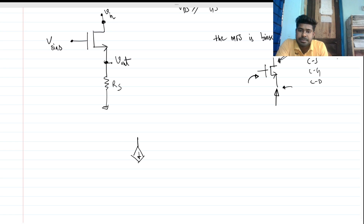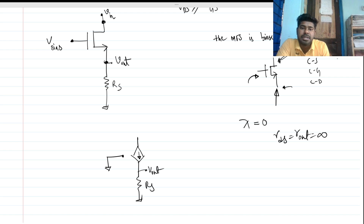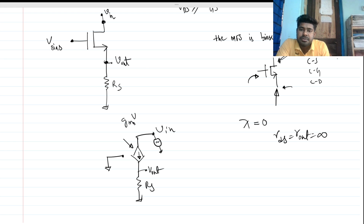The circuit is properly biased so the small signal model looks like this. This node is our Vout, this is our RS, and the bias node is grounded for small signal. Channel length modulation is neglected, so lambda equals zero — meaning Rout is infinity. We are giving the small signal Vin here. The dependent current source is gm times Vgs, and Vgs is zero minus Vout.